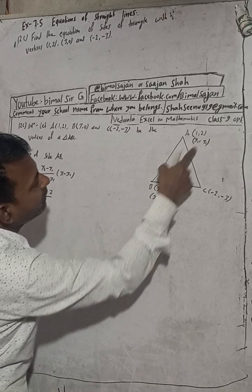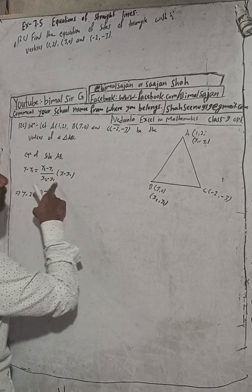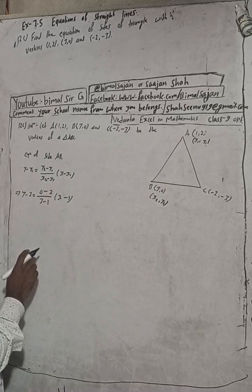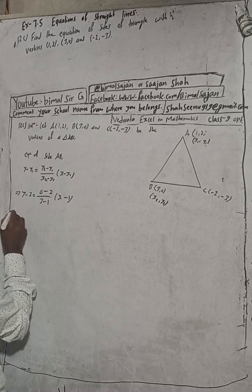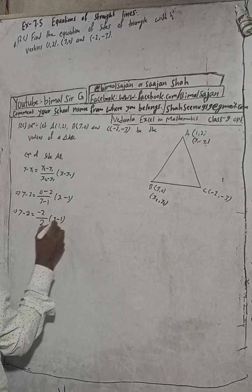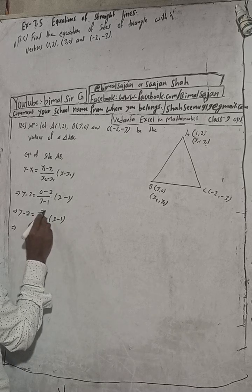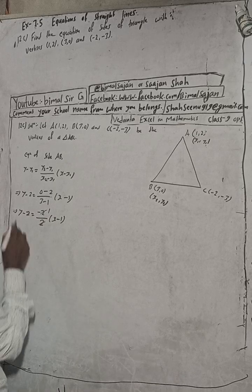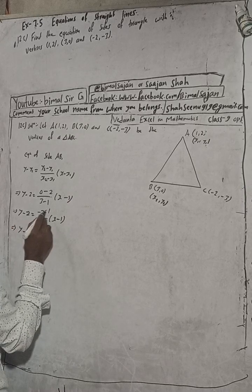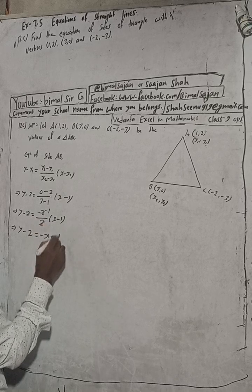So y minus 2 equals (0 minus 2) over (3 minus 1), times (x minus 1). That gives y minus 2 equals minus 2 over 2, times (x minus 1), which simplifies to minus 1. So y minus 2 equals minus 1 times (x minus 1), which means minus 1 into x gives minus x, and minus 1 into minus 1 gives plus 1.